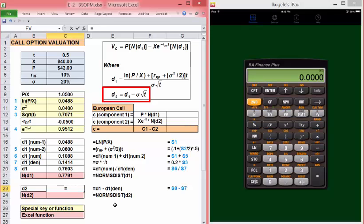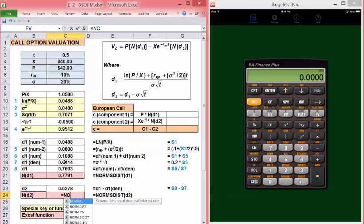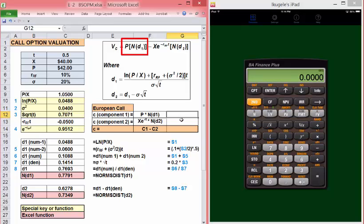d2 is d1 minus the denominator of d1. And again, we get the norm distribution value. To finish out, to get the value of the call, let's get the first component of the call, the P times N(d1). The price times N(d1). The second component is the strike price or exercise price times E to the minus RT times N(d2). And our call value is component 1 minus component 2.